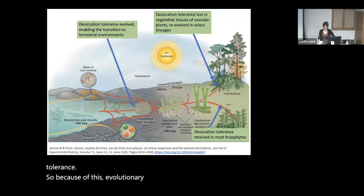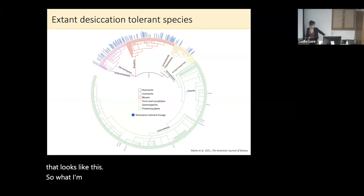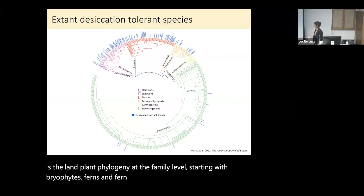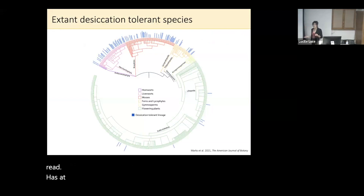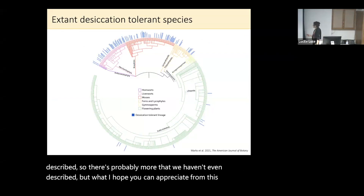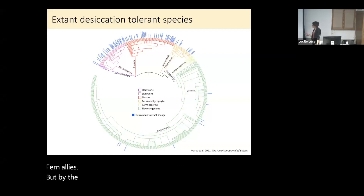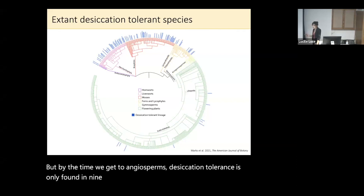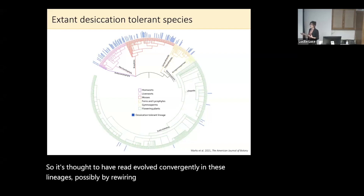Because of this evolutionary history, we end up with a distribution of extant desiccation-tolerant species that I'm showing here as the land plant phylogeny at the family level, starting with bryophytes, ferns and fernallis, and then angiosperms in green. Every family written in blue has at least one desiccation-tolerant species described. Desiccation tolerance is really common among the early diverging lineages of bryophytes and, to some extent, ferns, but by the time we get to angiosperms, desiccation tolerance is only found in nine — arguably ten — families of angiosperms, and they're really quite distantly related. It's thought to have re-evolved convergently in these lineages, possibly by rewiring similar pathways maintained in seeds.